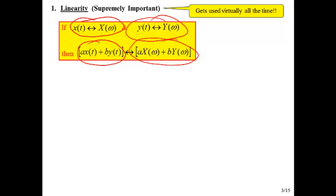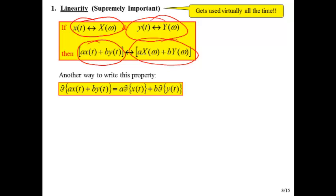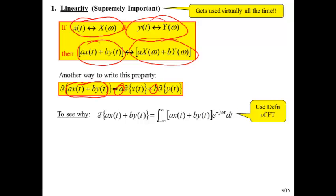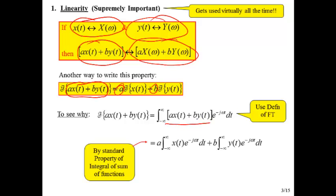Another way to write this property is that the Fourier transform of ax(t) + by(t) equals aX(ω) + bY(ω). We can pass the Fourier transform through the sum and through the constants. It's really easy to see - we end up with a linear combination inside an integral, and the standard property of integrals allows us to break this into two parts.